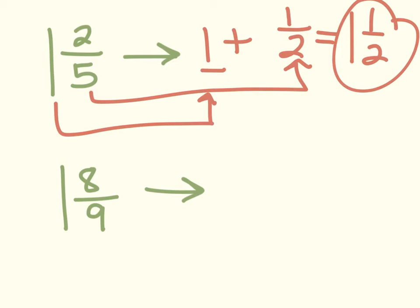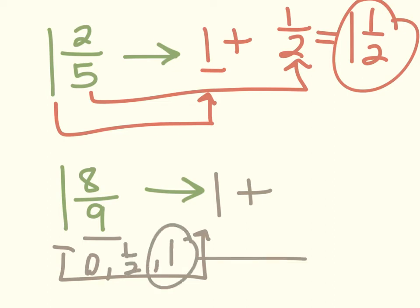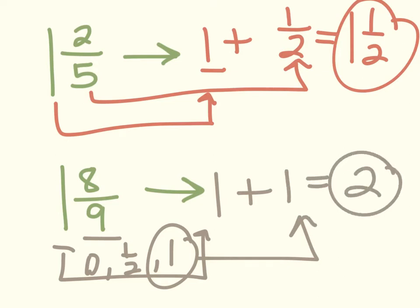I'm going to do the same thing for 1 and 8 ninths. I'll pull my 1 aside, and then look at 8 ninths and think: is 8 ninths closer to 0, 1 half, or 1? 8 out of 9 would definitely be closer to 1 whole, so I would add 1 plus 1 and get an estimate of 2.